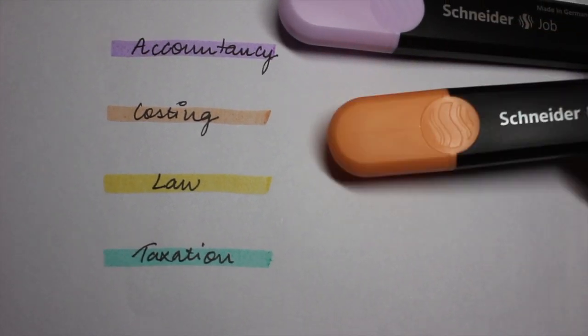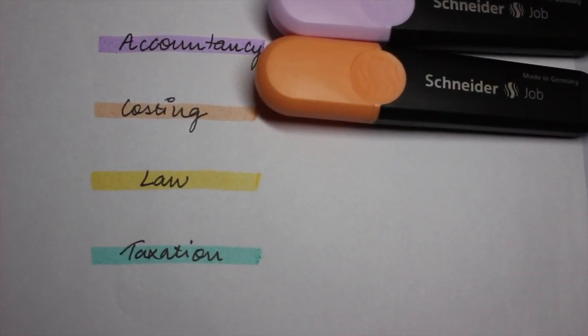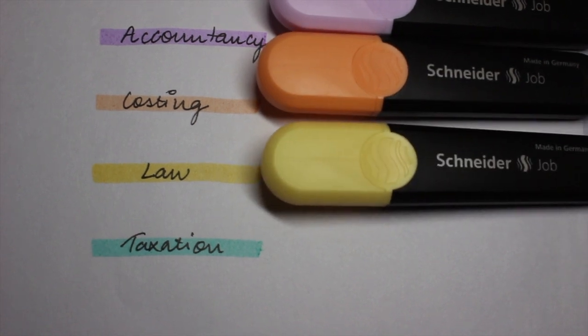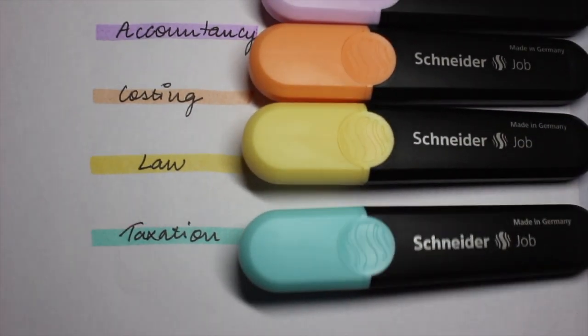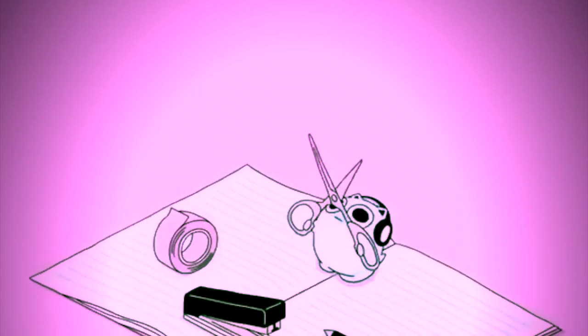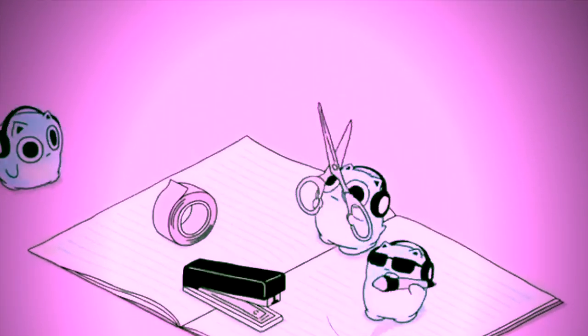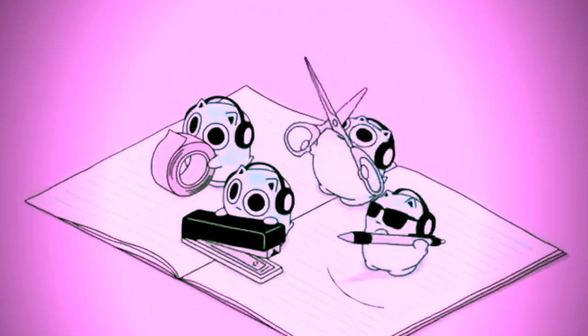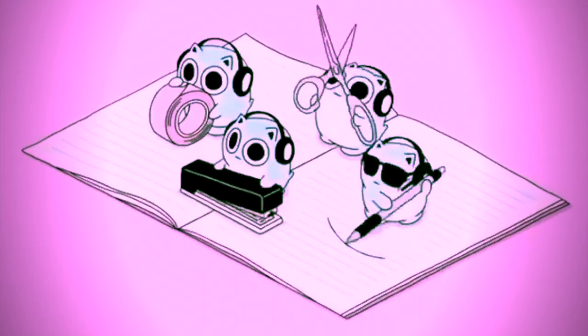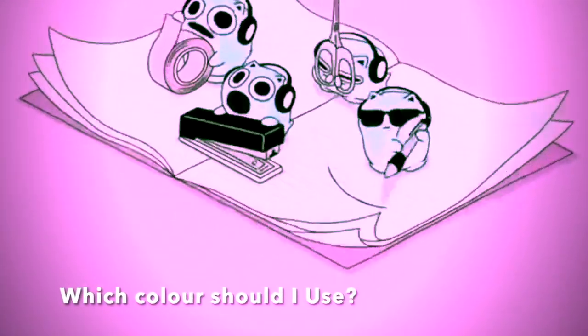Let's start. In every subject I take one color. For example I have taken purple for accounts, orange for costing, yellow for law, and blue for tax. I don't like using various colors for just one subject because I feel it's a waste of time choosing which color to use.